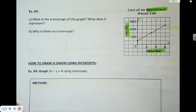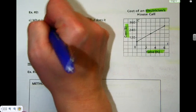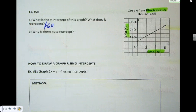What number did you write down? 60. Give me some units. Dollars. What does it represent? Well, it's telling us time equals zero. What does that mean if time equals zero? You're paying 60 bucks no matter what.